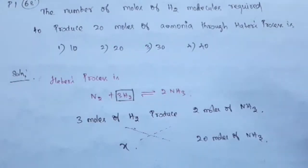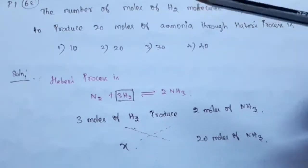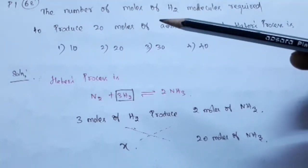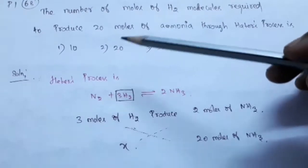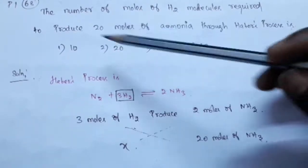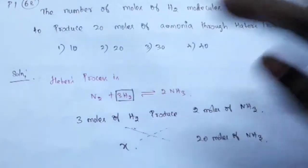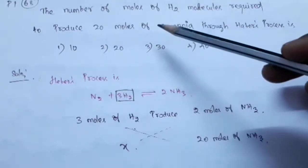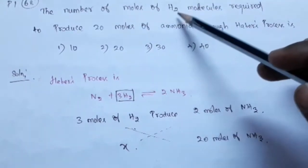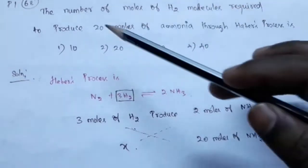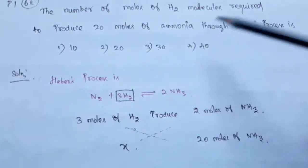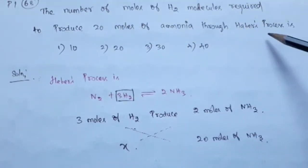In this video, we are going to discuss NEET questions from 2019. This is the question present in the P1 set, 68th question. The question is the number of moles of H2 molecules required to produce 20 moles of ammonia through Haber's process.